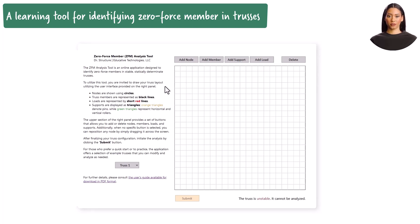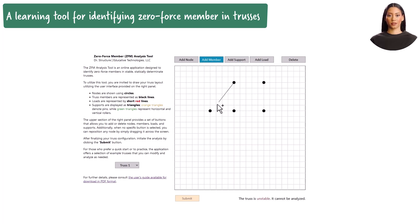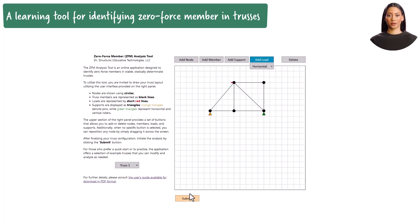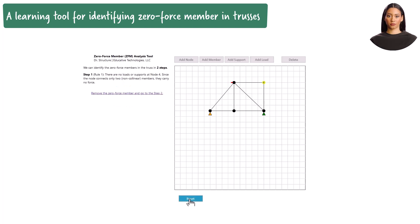Here is how the tool functions. Draw your truss by placing nodes, connecting them with members, adding supports, and applying loads. Once your truss design is complete and stable, you can submit it for evaluation. The tool then analyzes the truss and provides a step-by-step guide on identifying zero-force members.